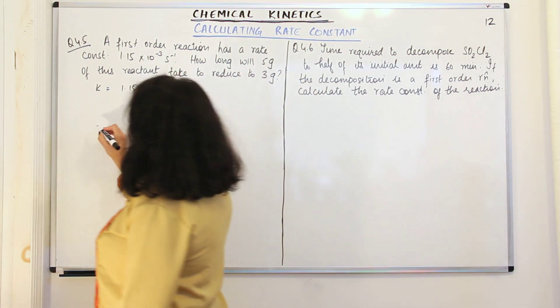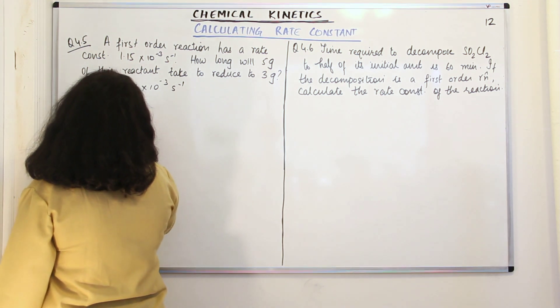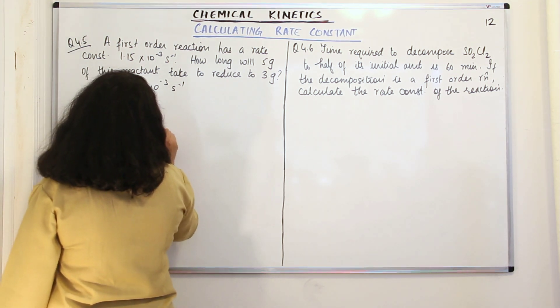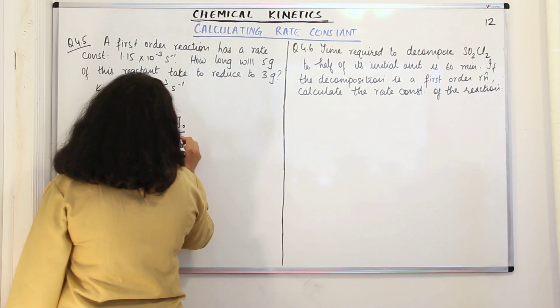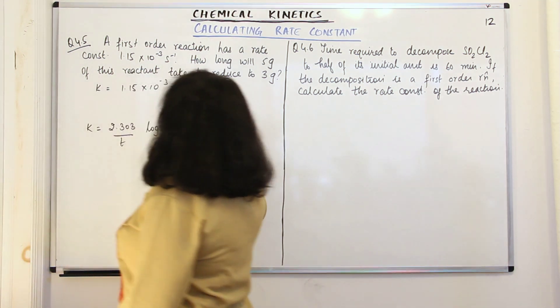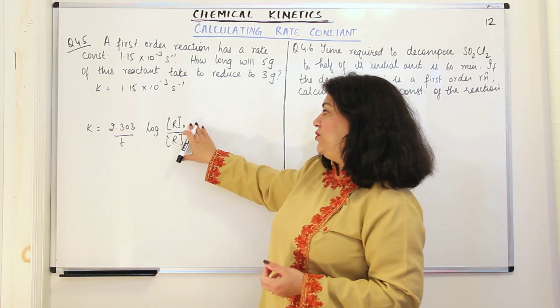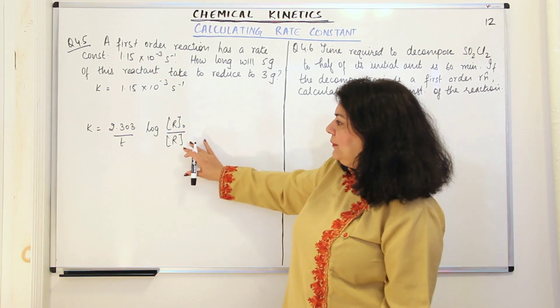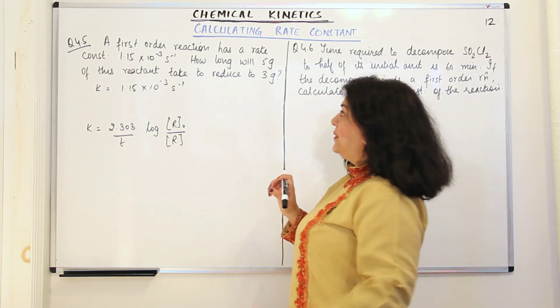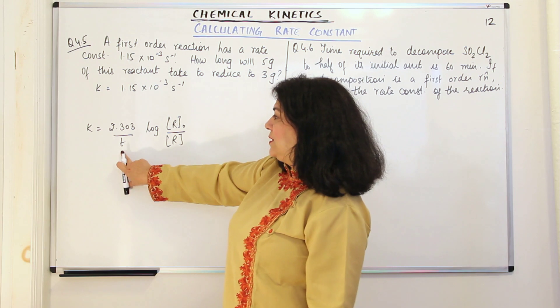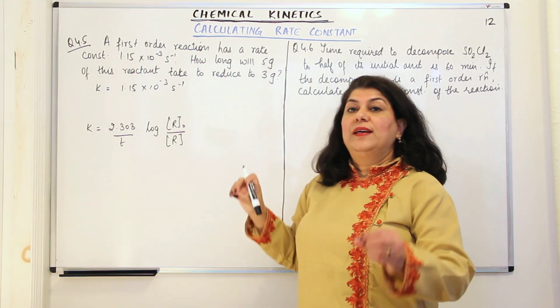We know that rate constant K is equal to 2.303 upon T log R0 upon R, where R0 and R stand for the molar concentrations of the reactant at initial time 0 and at any other time T. T is the difference between these times. Now the question asks for T, so T will go to the numerator and K will come to the denominator.